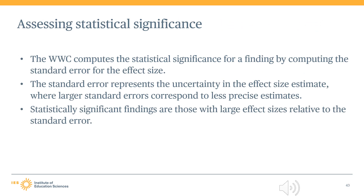In addition to reporting effect sizes that represent the magnitude of findings, the WWC will also assess the statistical significance of those findings. An effect is described as statistically significant when the measured differences between groups is unlikely to have been observed under the assumption that the intervention had no impact. The WWC follows a standard convention that labels a finding as statistically significant when the probability of observing an effect at least as large as the measured effect, under the assumption of no impact, is less than 1 in 20, or 5%. To compute statistical significance, the WWC first computes the standard error for the effect size, which represents the uncertainty in the estimate.